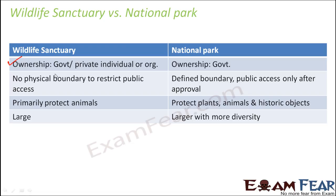In a wildlife sanctuary, ownership might be with the government, a private person, or a private organization. But in a national park, ownership mostly lies with the government — whether national or state. In a wildlife sanctuary there is no physical boundary to restrict public access, meaning it is not surrounded by a defined boundary, so people can enter from various points. However, there are still restrictions on human exploitation — people are not allowed to kill animals, cut down forests, or cause any harm. But since there is no physical boundary, people might sometimes enter the sanctuary illegally.